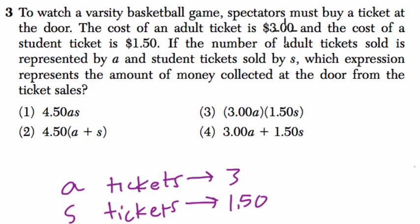If the number of adult tickets sold is A, and I've used that already, the number of student tickets is S, which expression represents the amount of money collected at the door from the ticket sales?